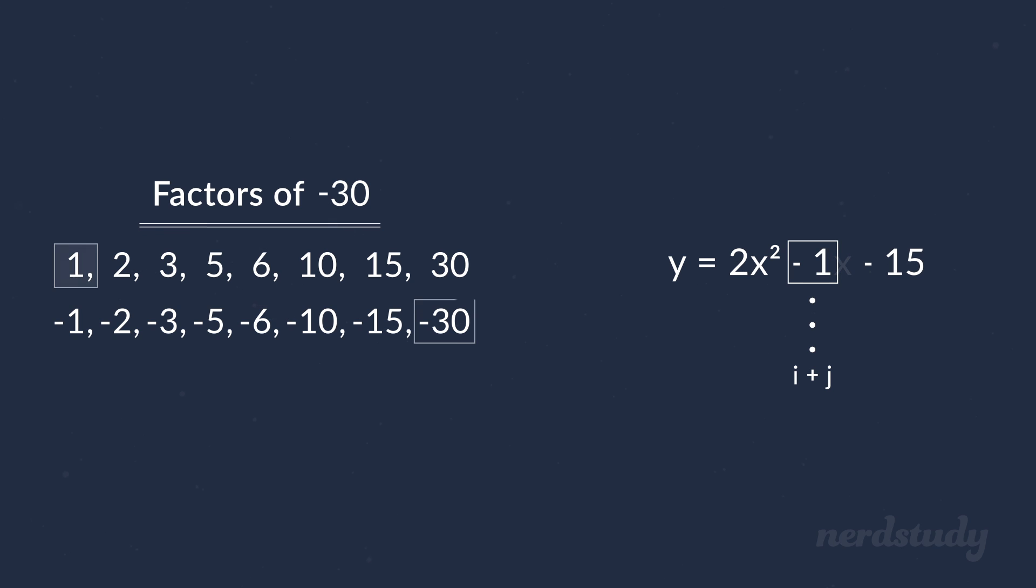So 1 and negative 30 multiplies to negative 30, but added together is negative 29. So these are not our numbers. Reversely, negative 1 and 30 is multiplied to become negative 30, but added together to become 29. Those are out the window.